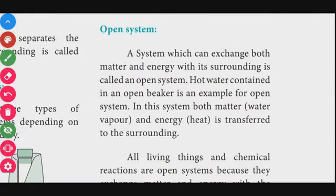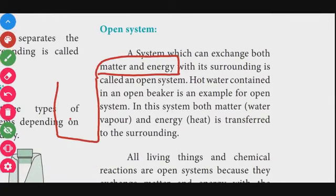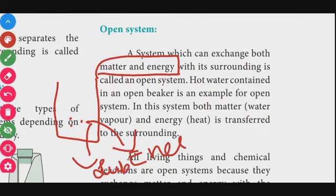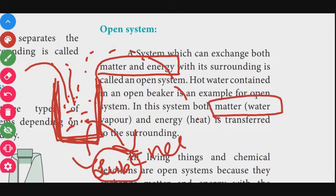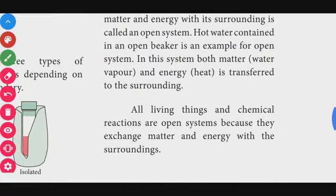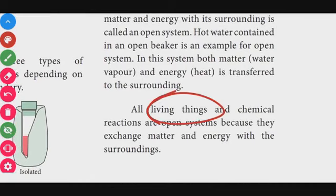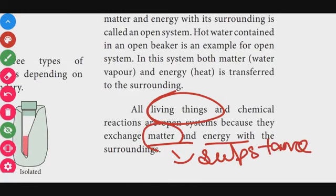An open system is one which can exchange both matter and energy with the surroundings. For example, hot water in an open beaker: the water vapor evaporates out — matter leaves — and energy also goes out because the beaker is open. Matter is the water vapor going out, and energy also escapes. All living things and chemical reactions are open systems because they exchange both matter and energy.